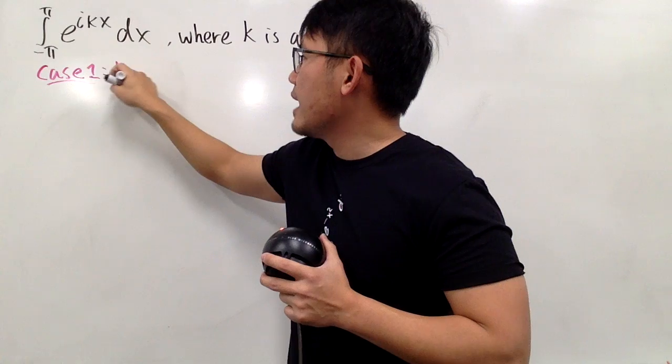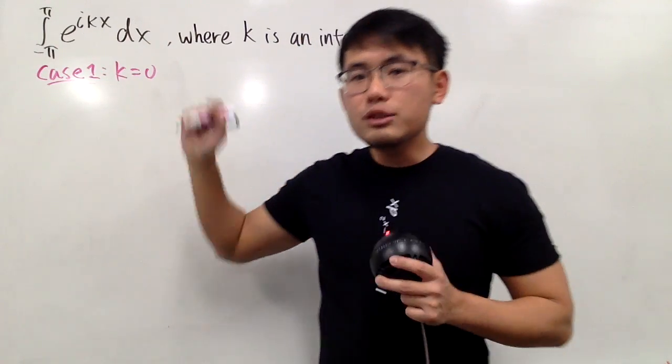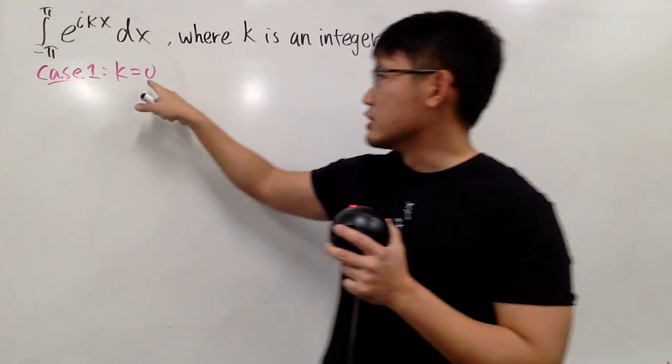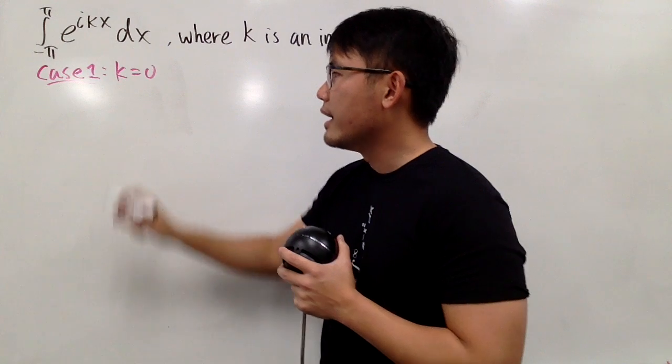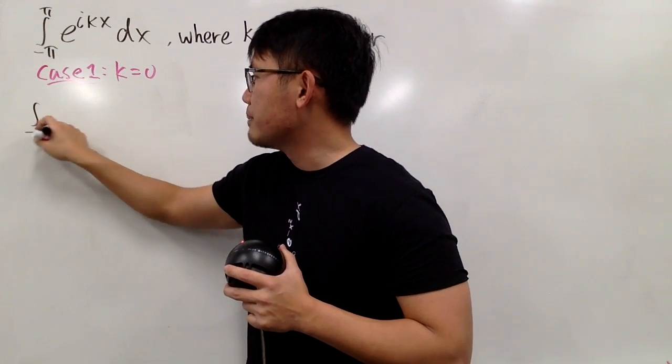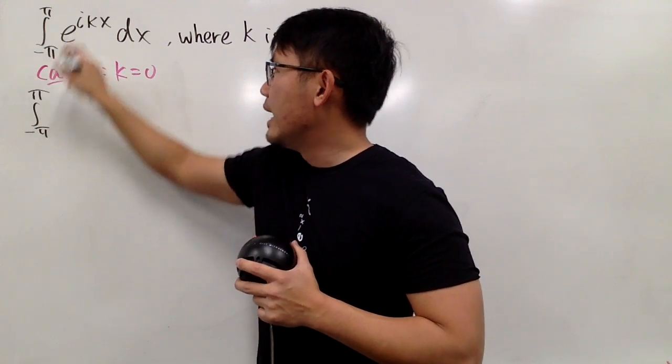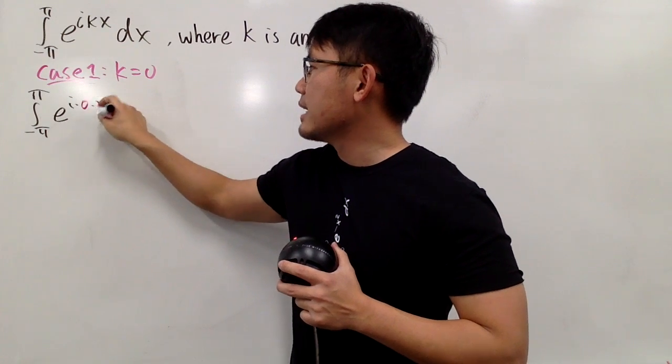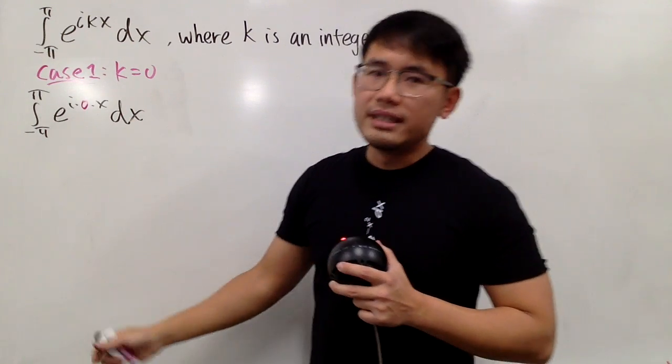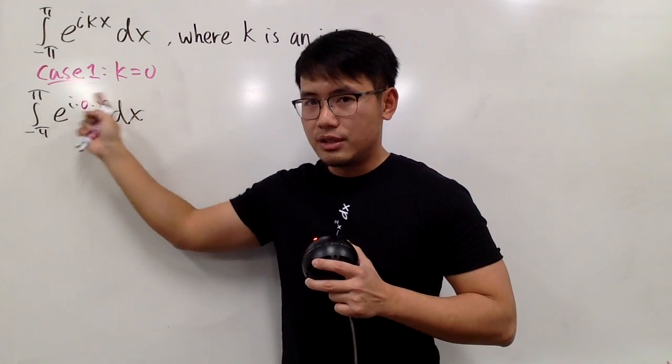Case 1 is when k is equal to 0. This right here is not bad at all because we can just put the root right here for the k right away. So we're looking at the integral from negative pi to pi, and we have e to the i times 0 times x dx. And as you can see, all this is just 0.